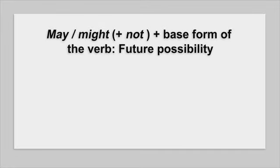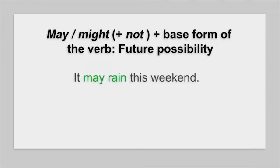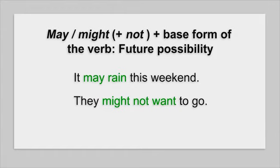Let's look at some of these sentences. We use the modal may or might and the base form of the verb to talk about future possibility. We use may or might when we are less than 50% certain. For example, when we say it may rain this weekend or they might not want to go, we are not certain that it will rain or that they won't want to go, but it is possible.